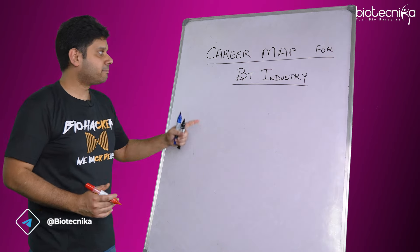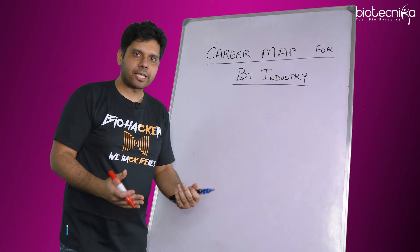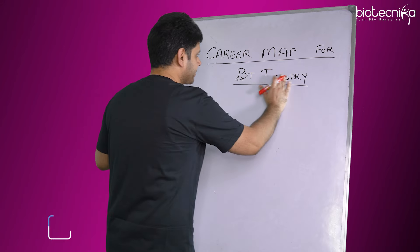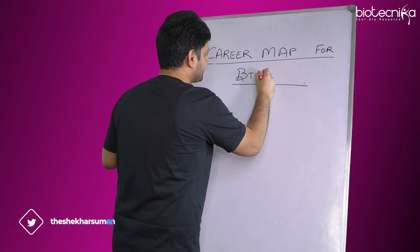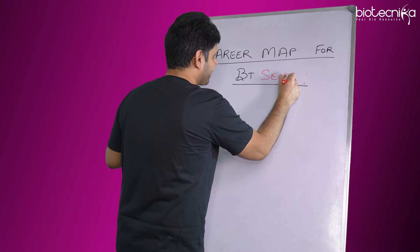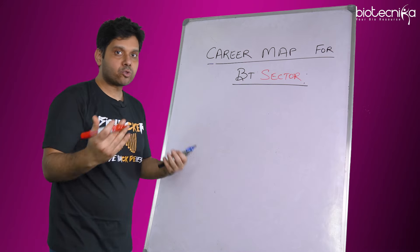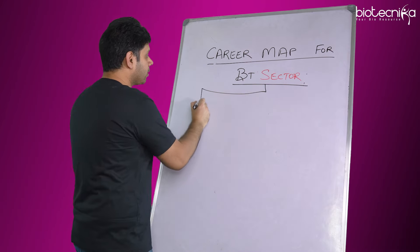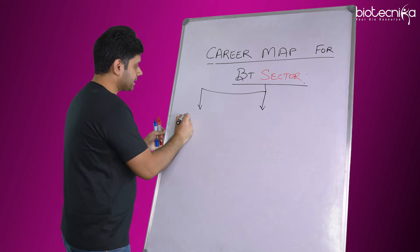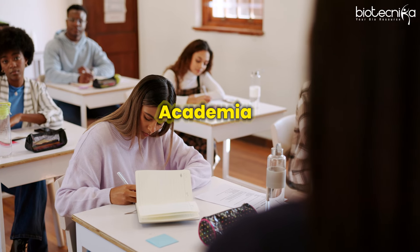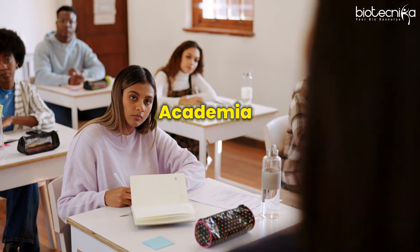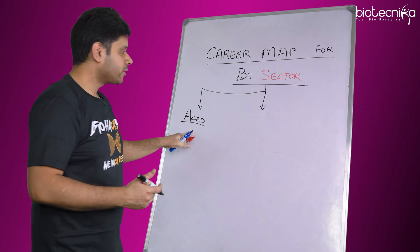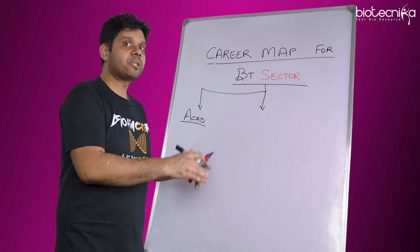We will divide the biotech sector — I should call it a sector rather than just an industry — into three parts. The first part is academia. Academia is basically where professors and postdoctoral researchers come from. What they do is research alongside teaching.